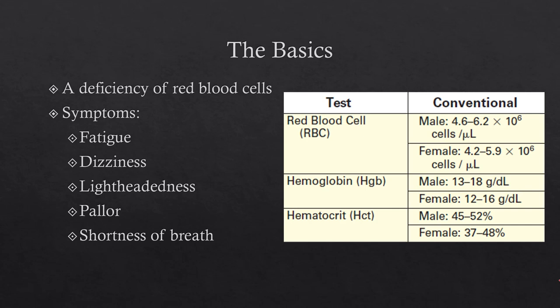What is anemia? The definition of anemia, if you look it up, is just a decrease in any of the red blood cell or hemoglobin values. These are some of the common values — it really depends on the lab, but usually we look at the hemoglobin. For men, the lower end is 13. For females, if you're under 12, it's generally thought of as anemia.